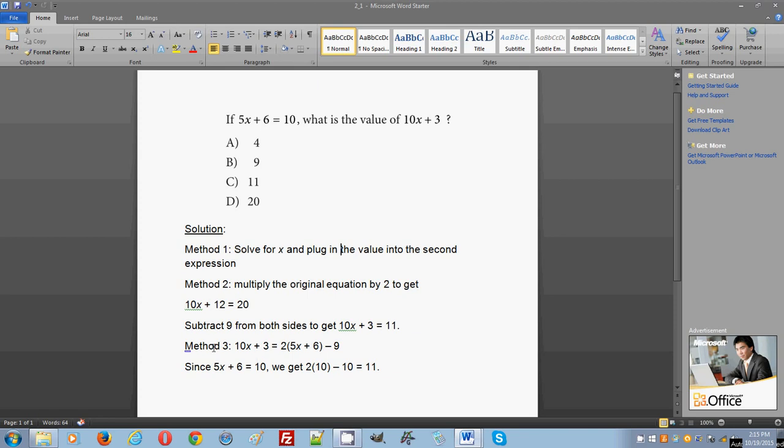Now the third method is also a substitution method. It's pretty much the same thing as method 2 except that it's more algebraic, it deals with direct substitution. They start with 10x plus 3 and they're telling you how to get 10x plus 3 in terms of the original equation. To do that, they also multiply by 2.